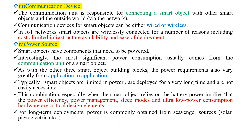The third characteristic is the communication device, a very important characteristic. The communication unit is responsible for connecting a smart object with other smart objects and the outside world via the network. Communication can be wired or wireless, but in most cases wireless is used. In IoT networks, smart objects are wirelessly connected for reasons including cost, limited infrastructure availability, and ease of deployment.